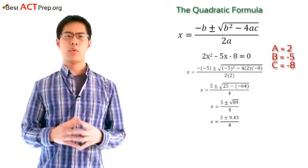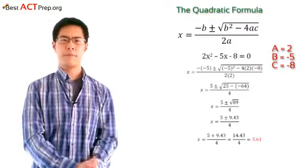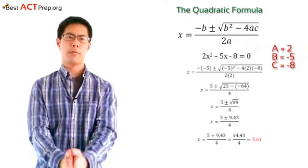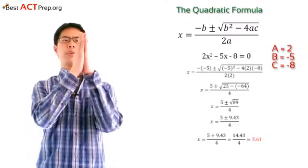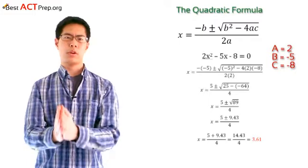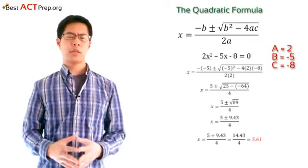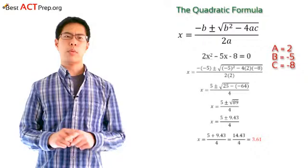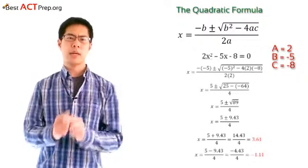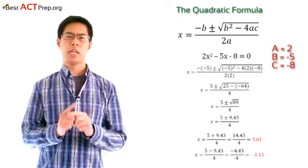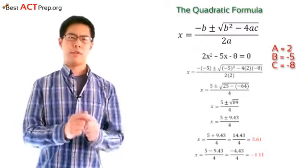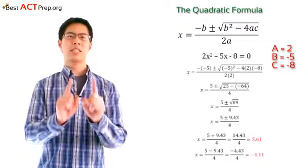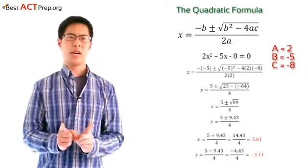Now, solving the equation when we use the plus sign, 5 plus 9.43 is 14.43, and 14.43 divided by 4 equals 3.61, or about that. So our first solution is 3.61. And then solving when we use the minus sign, 5 minus 9.43 is negative 4.43, and negative 4.43 divided by 4 equals negative 1.11. So our second solution is negative 1.11.